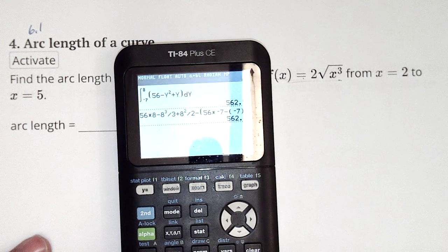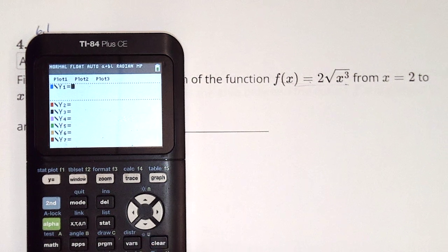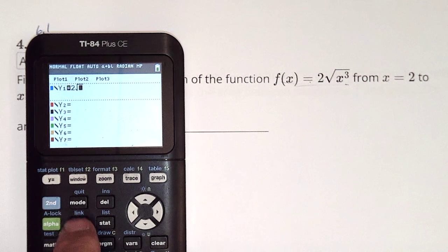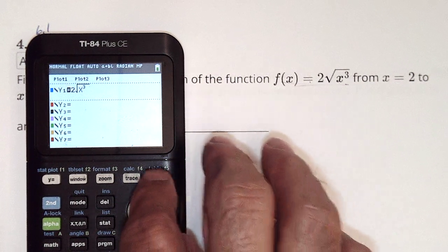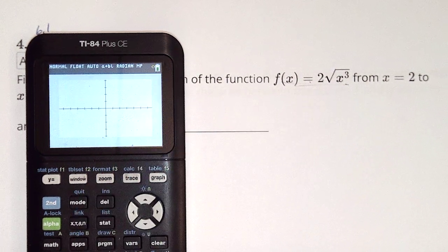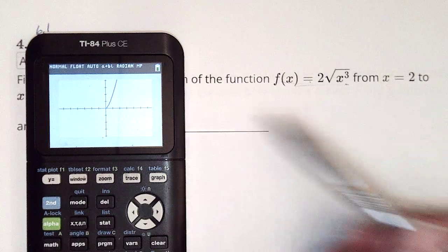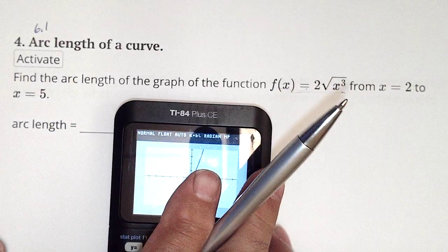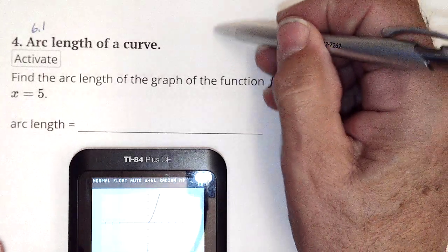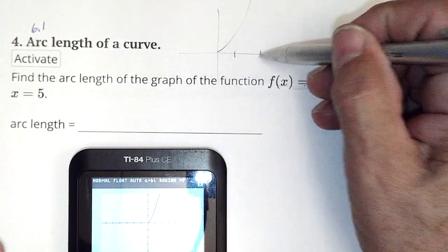I'm going to pull out my calculator and type in that equation, 2 square root of x to the third. Let's get in a little closer, zoom 4. We're finding the length of the arc between x equals 2 and x equals 5. That goes off the screen, but that's what we're doing. We've got a function that looks like this, and we're looking between 2 and 5.